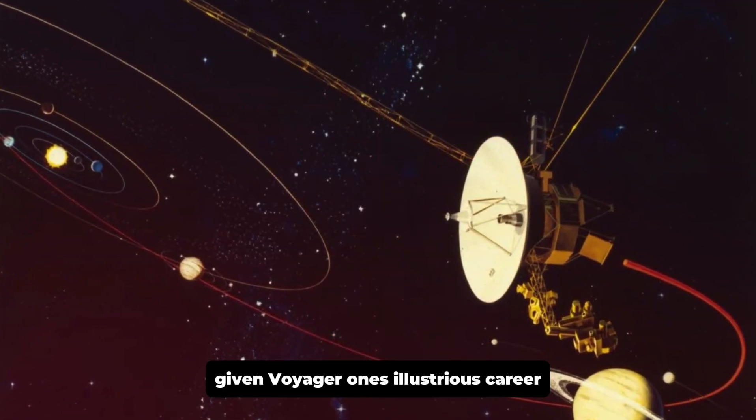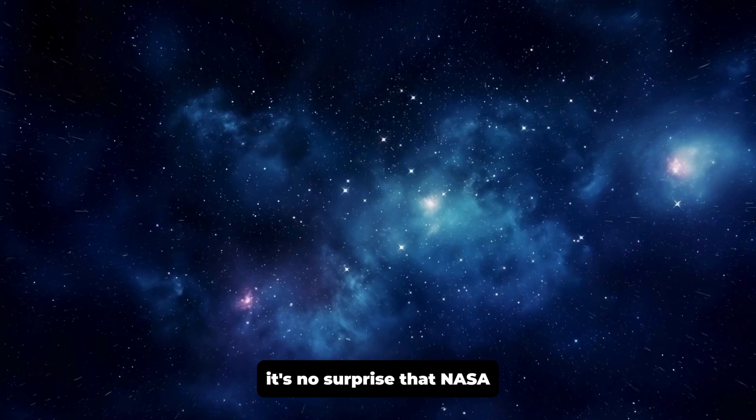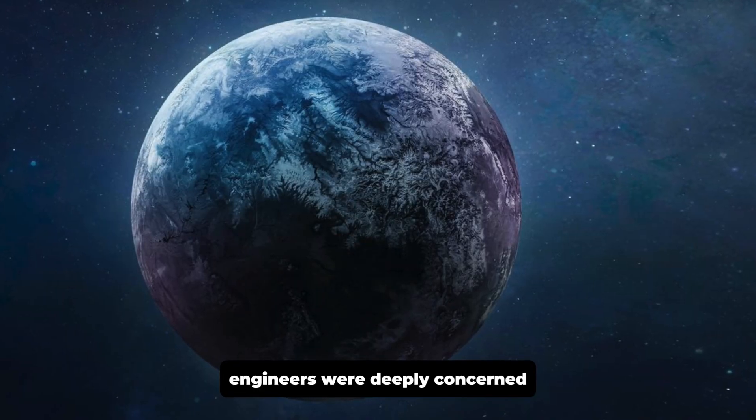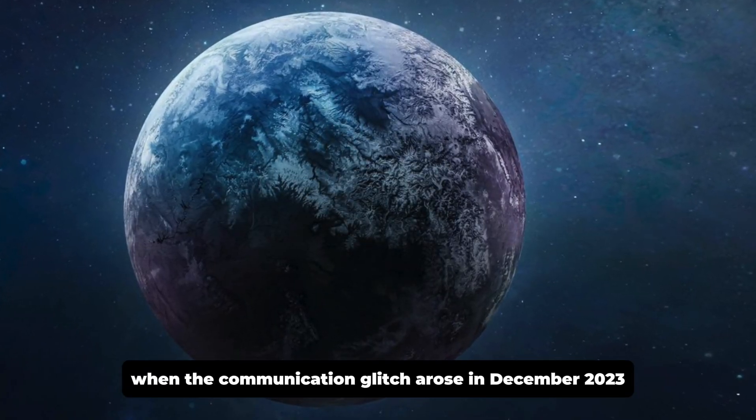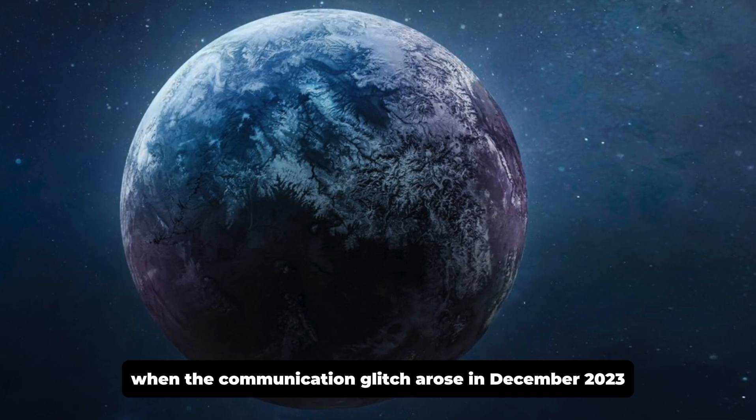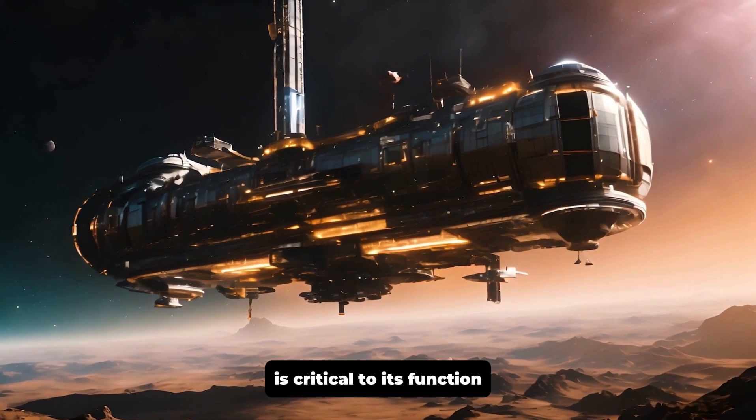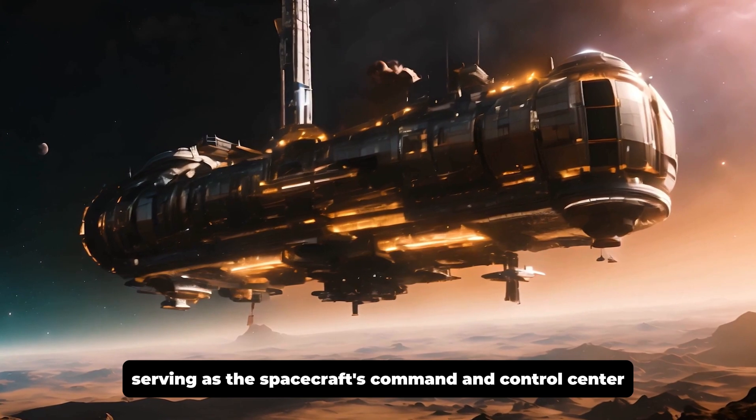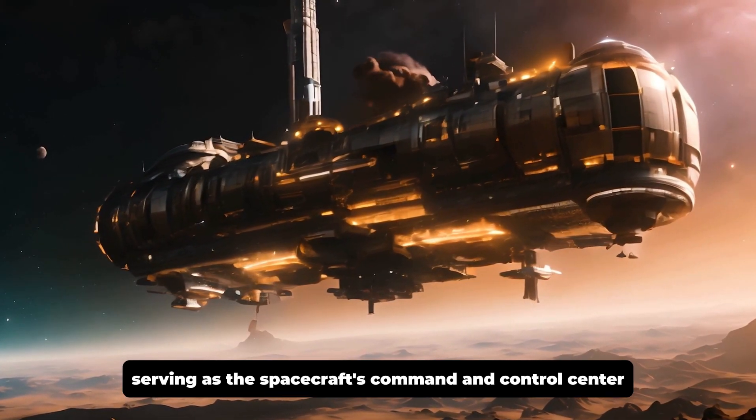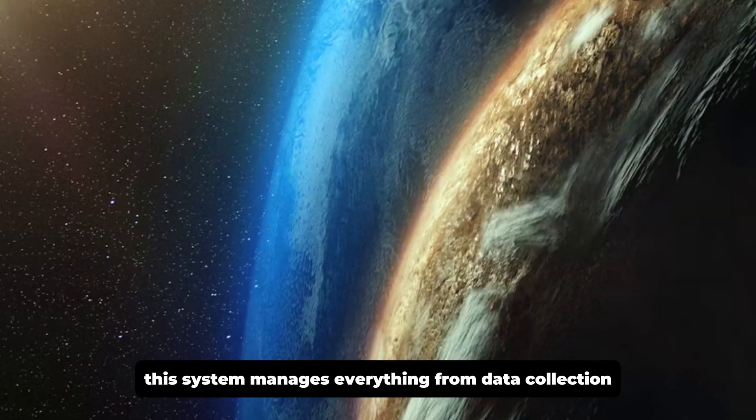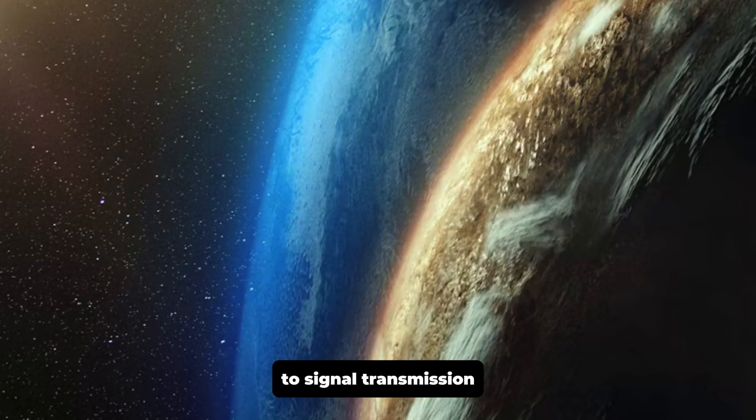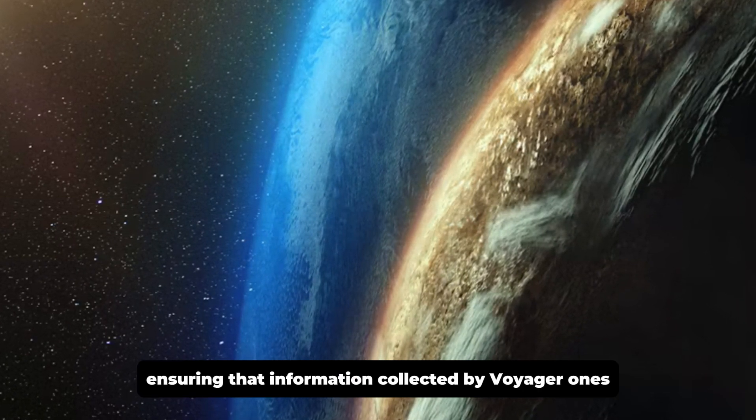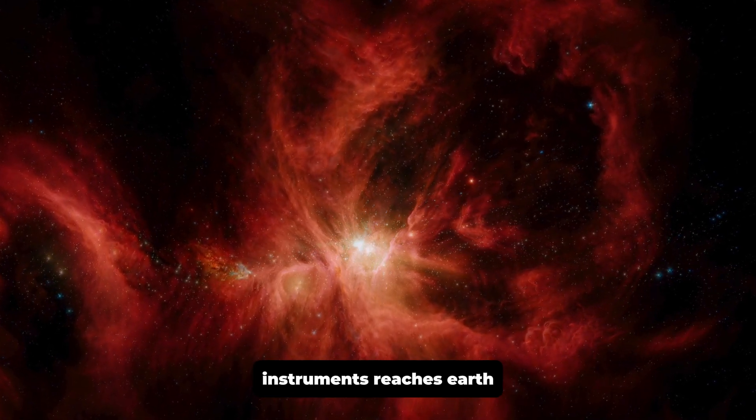Given Voyager 1's illustrious career, it's no surprise that NASA engineers were deeply concerned when the communication glitch arose in December 2023. The probe's flight data system is critical to its function, serving as the spacecraft's command and control center. This system manages everything from data collection to signal transmission, ensuring that information collected by Voyager 1's instruments reaches Earth.